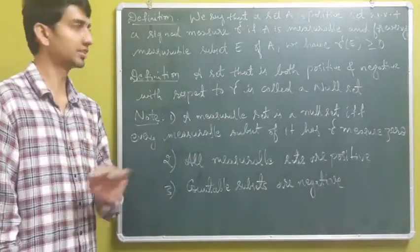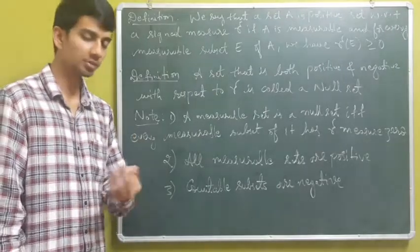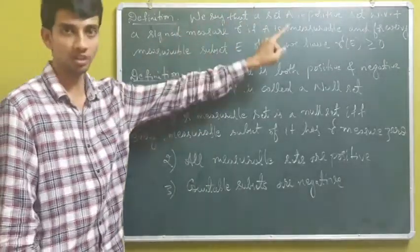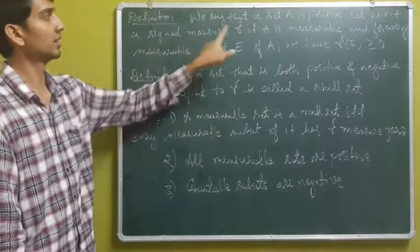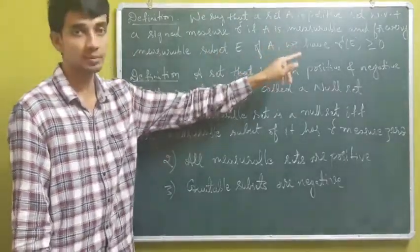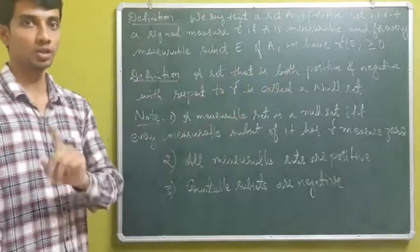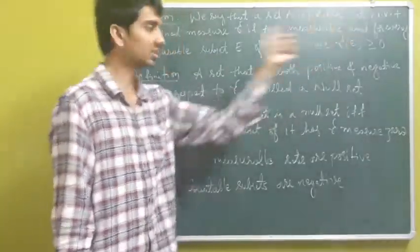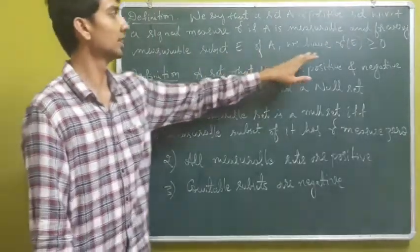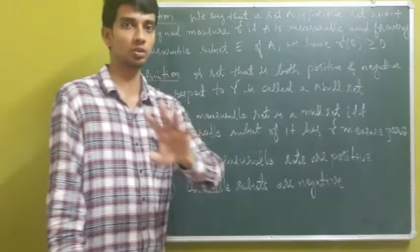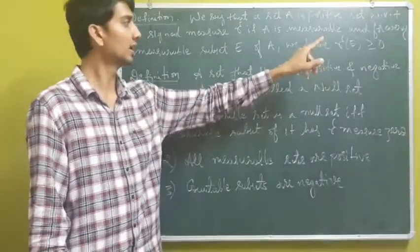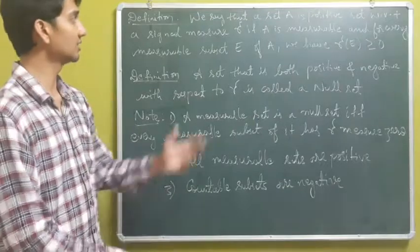Next we have three definitions: positive set, negative set, and null set. We say that a set A is positive with respect to a signed measure if A is measurable and for every measurable subset E of A, we have the signed measure of E to be greater than or equal to zero.